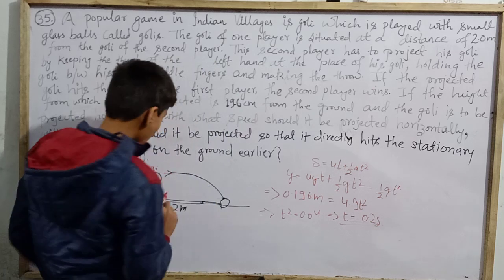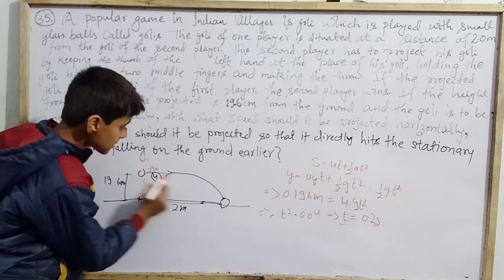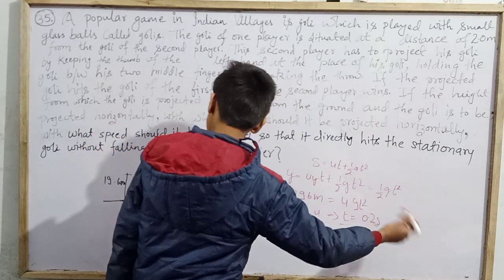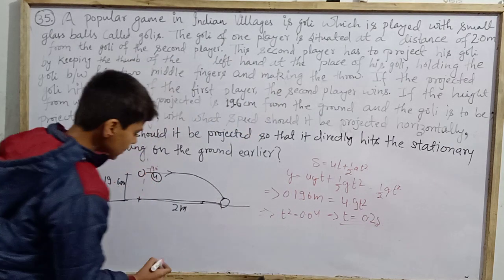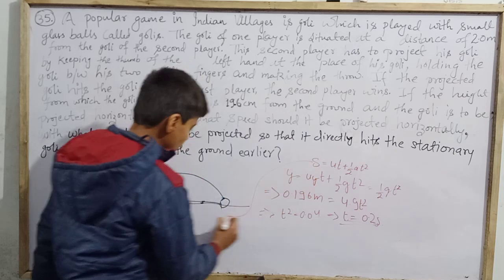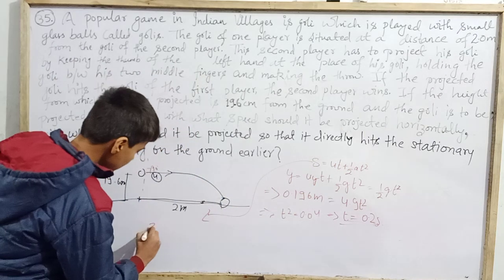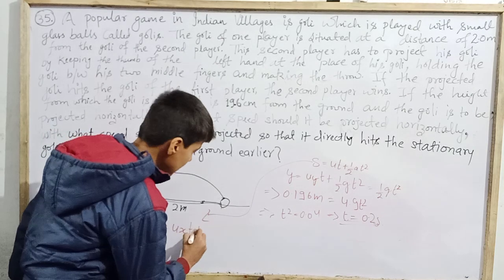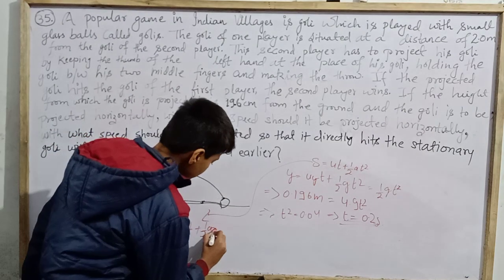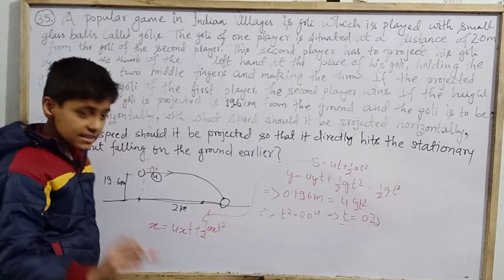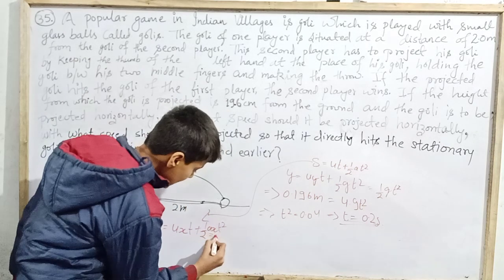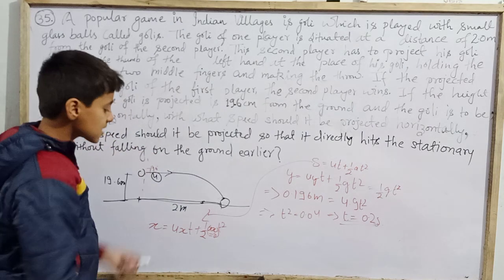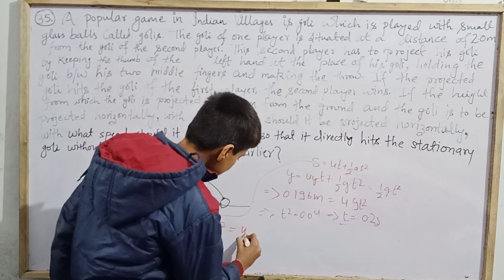So t = 0.2 seconds — this marble can strike the other marble if I throw horizontally. Now I know this time. According to the formula for the x coordinate: x = u_x·t + half·(acceleration along x)·t². The acceleration along the x axis is 0, so this simplifies to x = u_x·t.